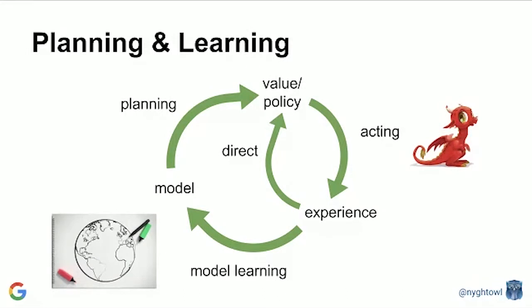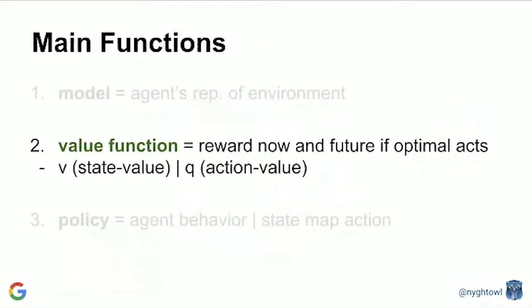Now let's talk about value function. When you explore reinforcement learning for the first time in most materials out there, they start with value function. I deliberately explained the model first — the agent's representation of its environment. The agent is trying to understand its space; it may try to track it, it may not. That's a key thing to understand when looking at these algorithms.